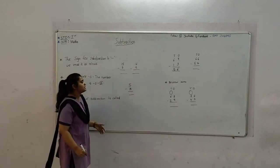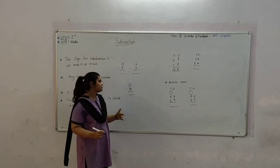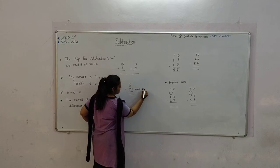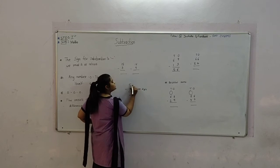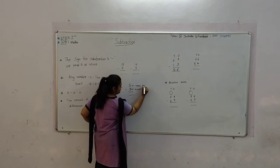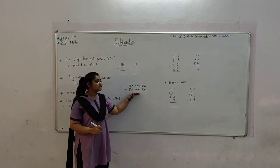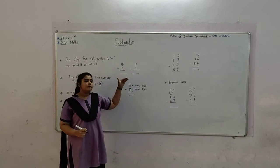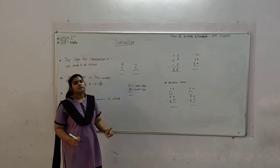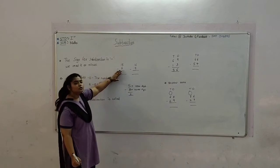Now let's start the exercise. 5 minus 3. The method of subtraction: this is called the lower digit, and this is the upper digit. The method is: keep the lower digit in your mind and count up to the upper digit. This is 3 in your mind, count up to 5 — that's 4 and 5. So 2 is the difference.